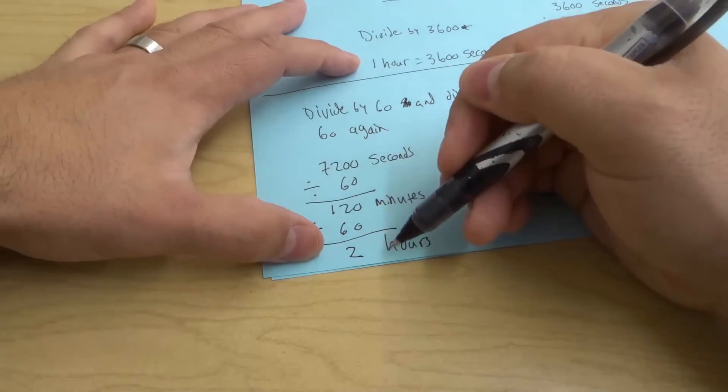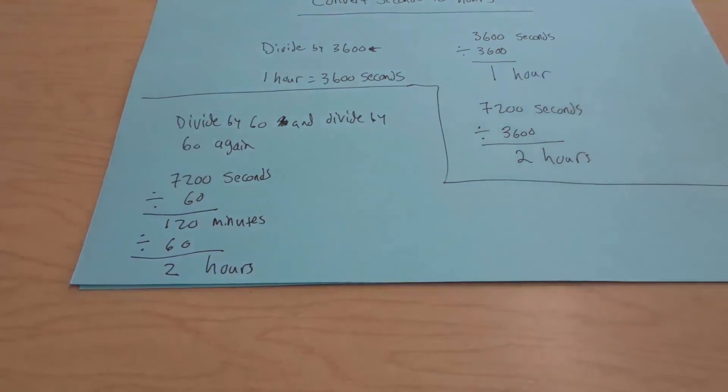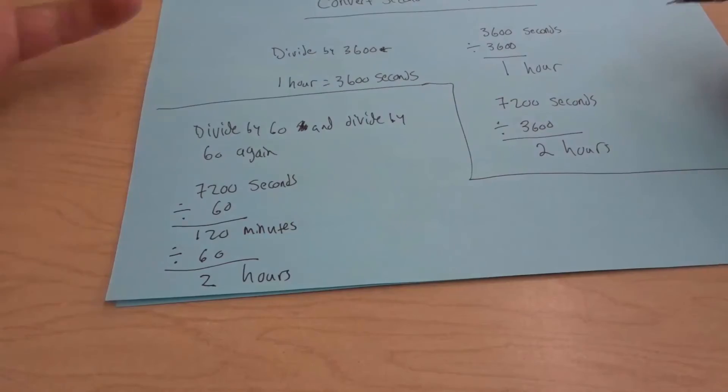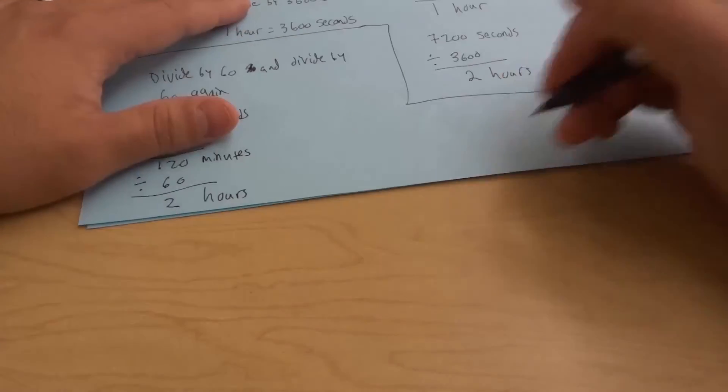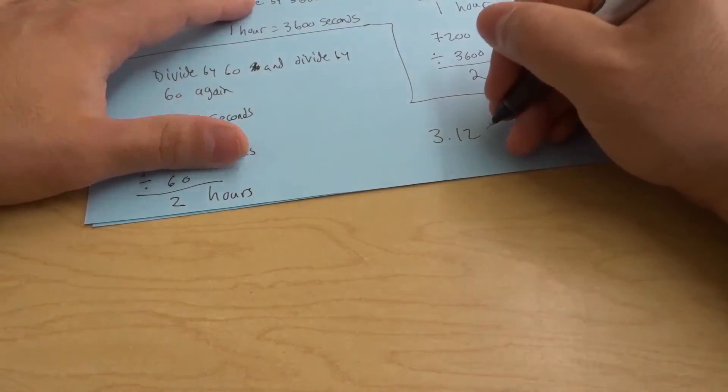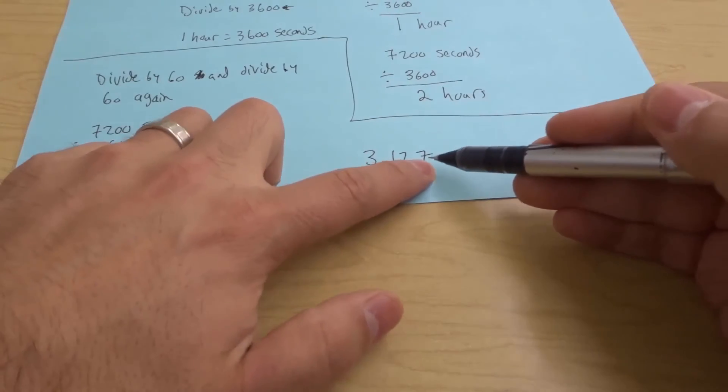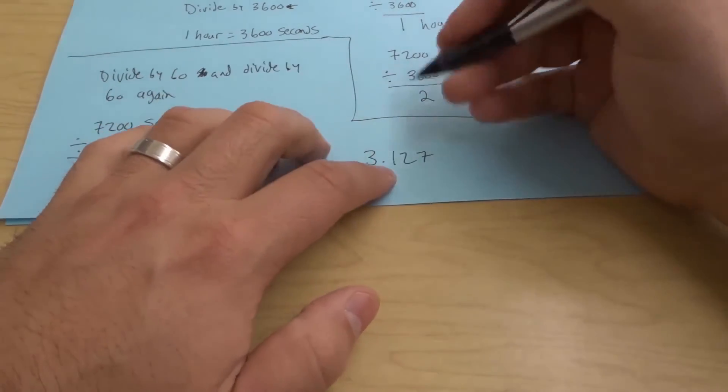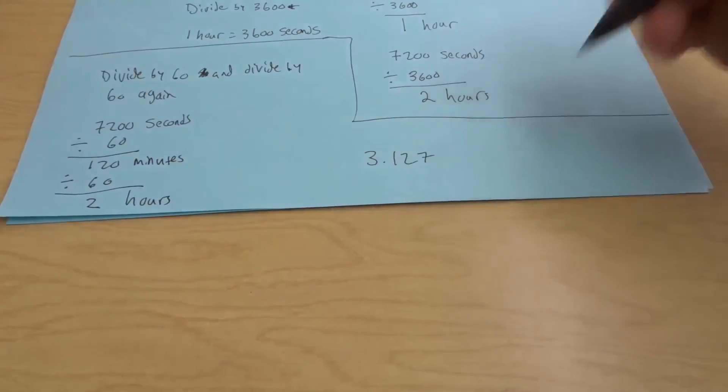So once again, 7,200 seconds is equal to 2 hours. And you can do this with any number of seconds, and it will give you either a whole number, or it might give you a different number. Like, let's say it gives you 3.127, something like that. That means it's 3.127 hours. So 3 hours and 127 thousandths of an additional hour.